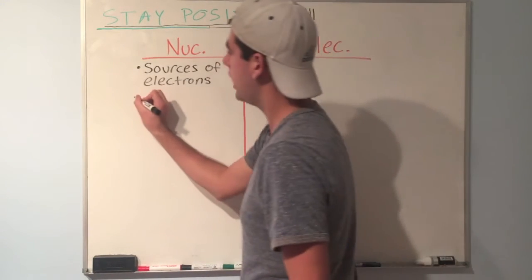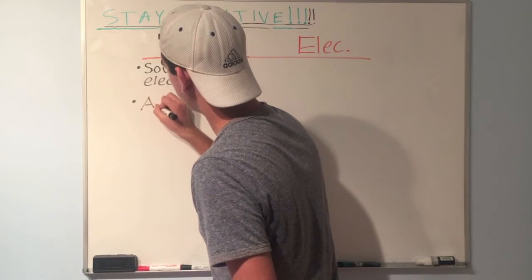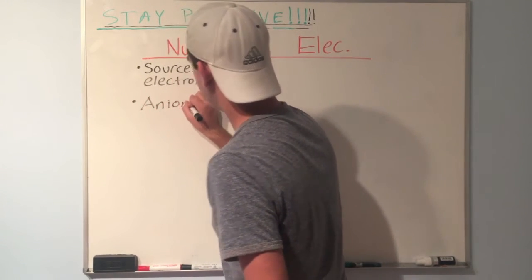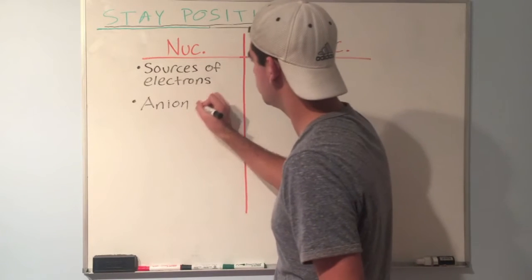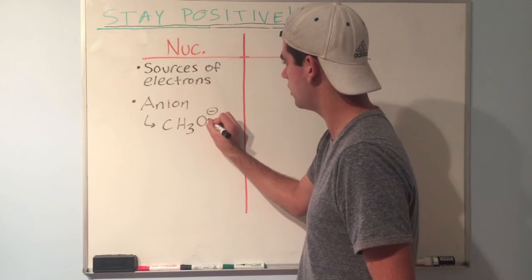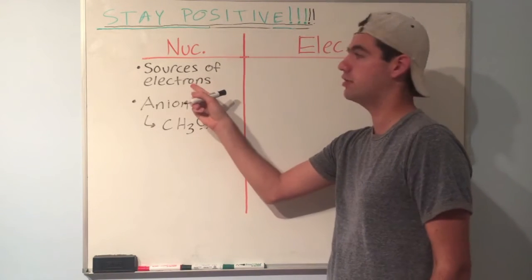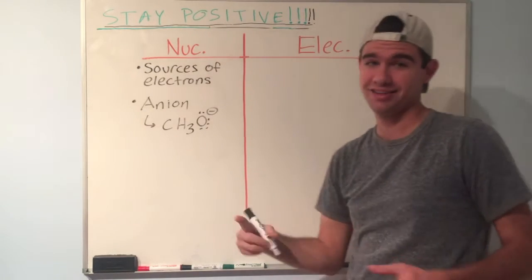A full anion. An anion is a species with a full negative formal charge. So an example might be methoxide, CH3O-. That oxygen has a full negative formal charge and all of these lone pair electrons can serve as a source of electrons to attack an electrophile. We'll get into that later.